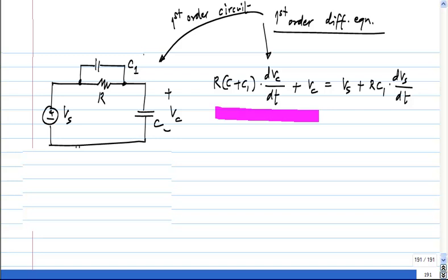Vs equal to 0. So, the source free circuit, when you set the source to 0, the differential equation that governs the circuit is the homogeneous equation. That is why the right hand side is 0, the input is 0.